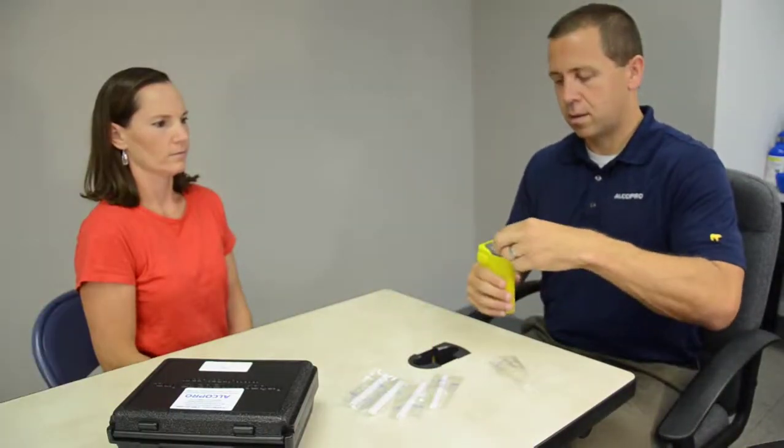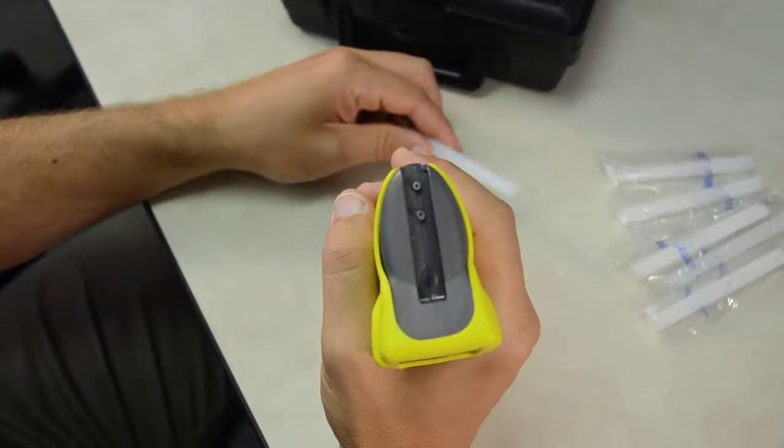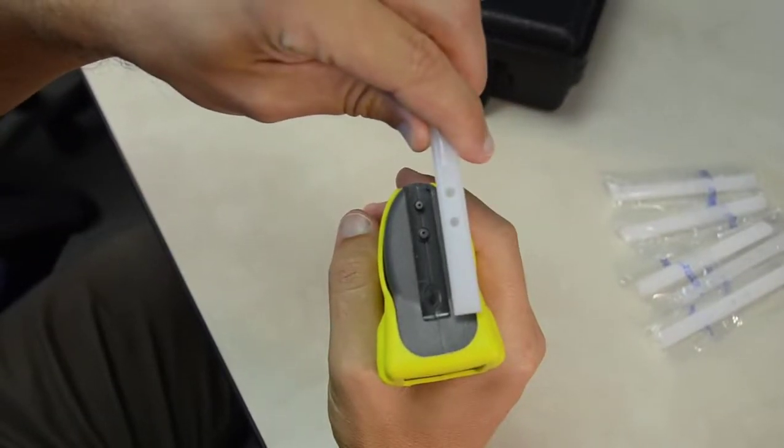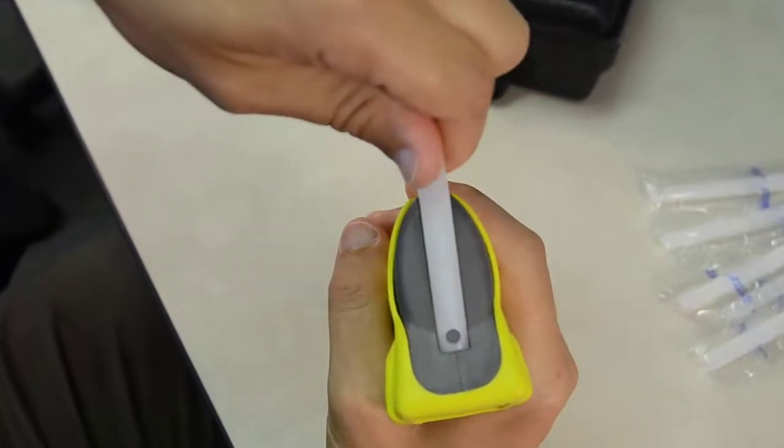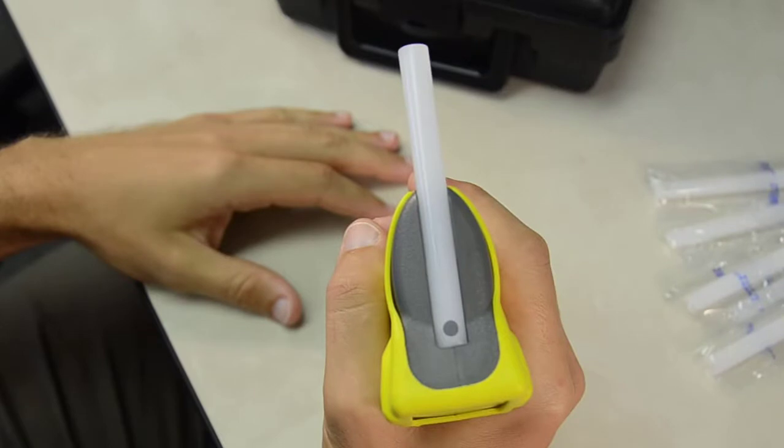To initiate a test, use a clean mouthpiece. Insert the long, closed end of the mouthpiece into the mouthpiece channel located at the top of the instrument. Rotate the mouthpiece down and the two small holes along the bottom of the mouthpiece will snap onto the two breath inlet ports inside of the channel.